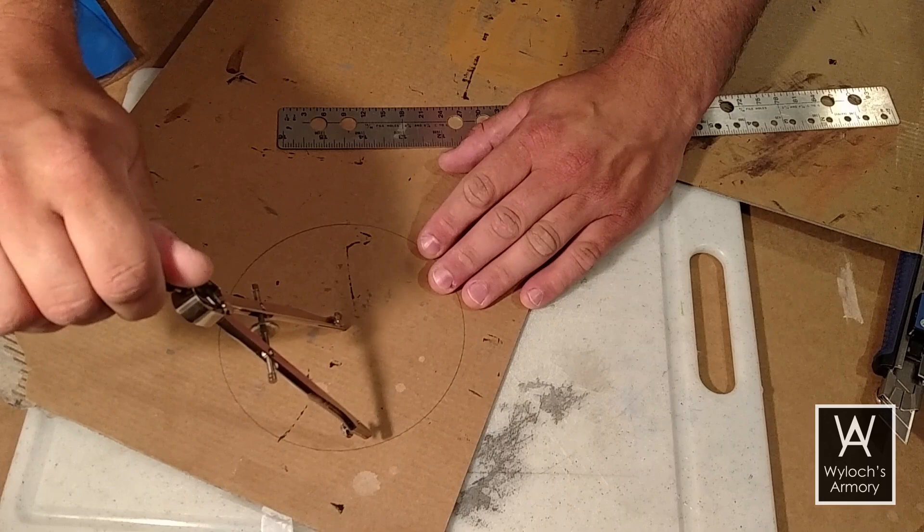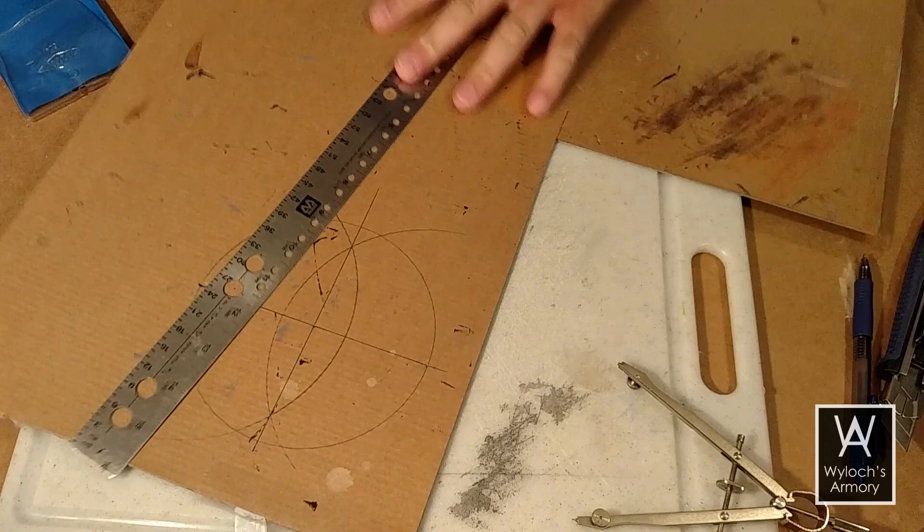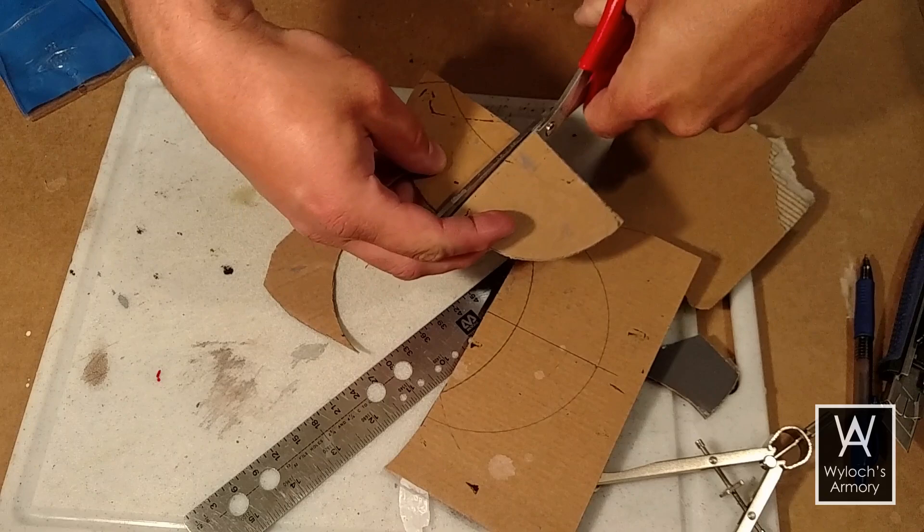Now, I ran out of chipboard, so you see me using a very thin corrugated cardboard here. But ideally, from chipboard, you would measure out a perfect circle with a radius of 2 and 3 quarters of an inch. Then, draw perfect quadrants using the trick that we talked about back in episode 25, and cut them out. You only need two of them.